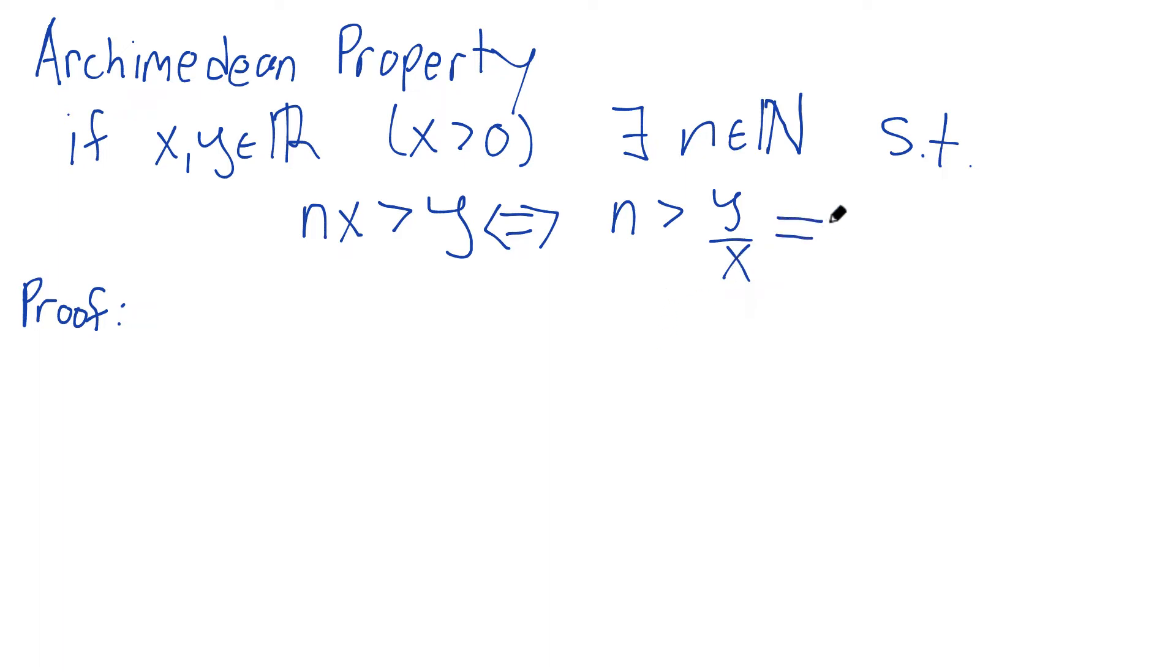Another way of saying that is that the natural numbers are not bounded above. So you can say they're unbounded. And so this is the key here, is that I want to show that the natural numbers are not bounded above.